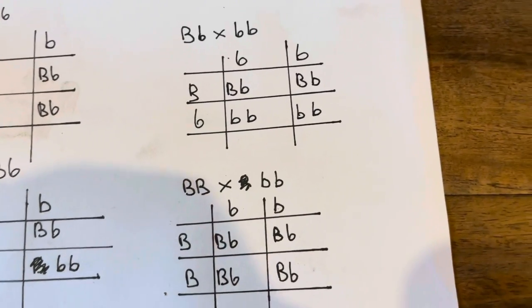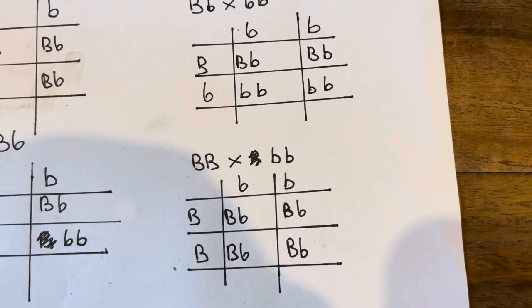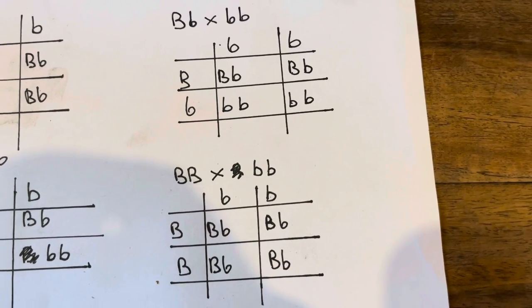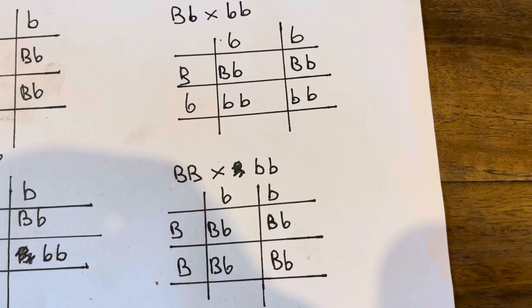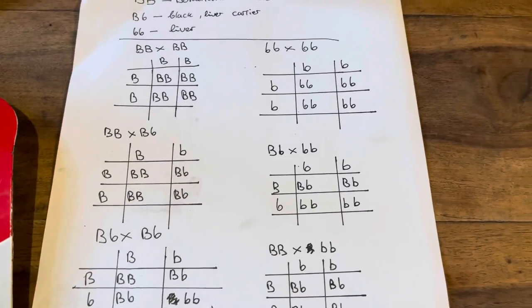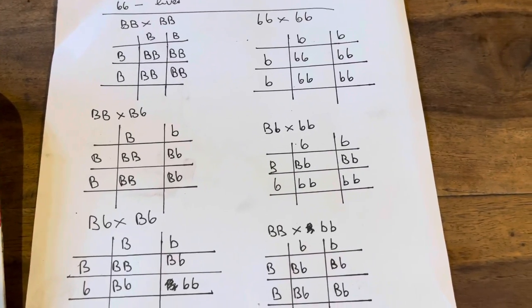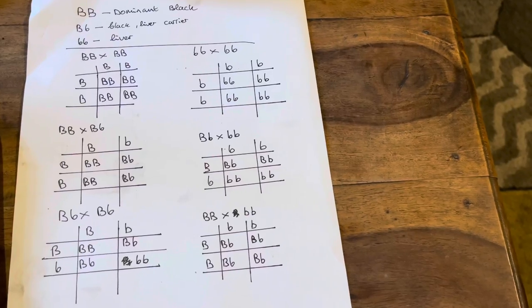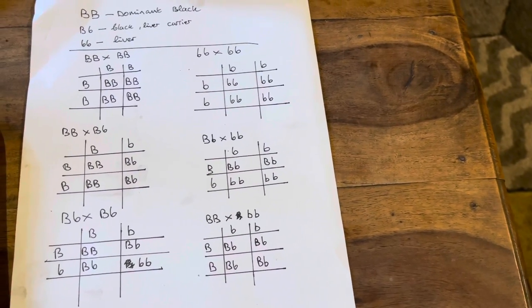So you've got dominant black with a liver, which makes it 100% liver carriers but no actual livers. So anyway, hope you enjoyed this very short, very basic description. And yeah, see you all soon. Bye.